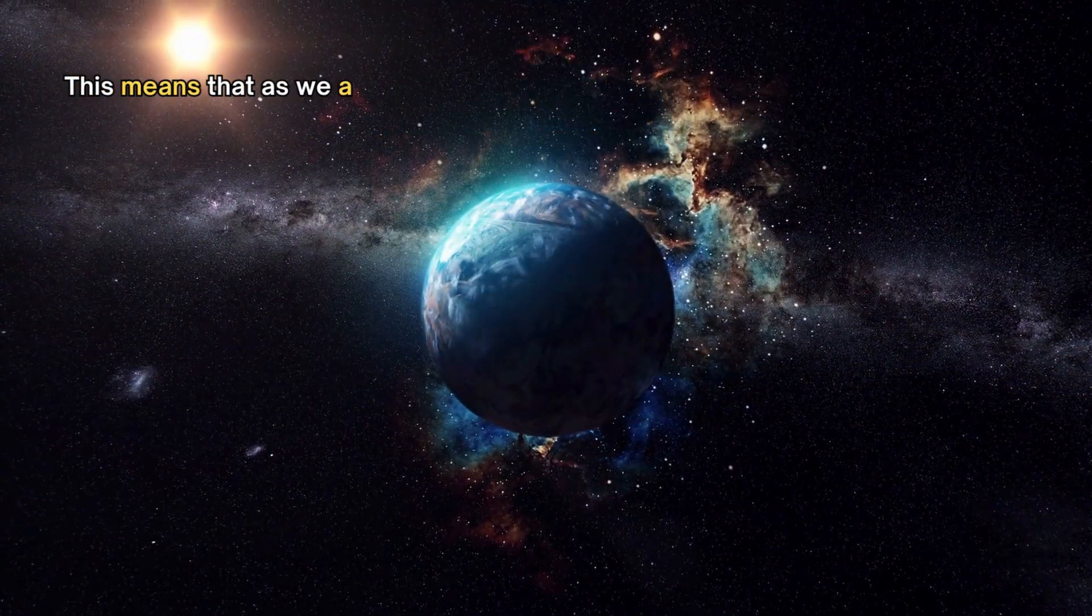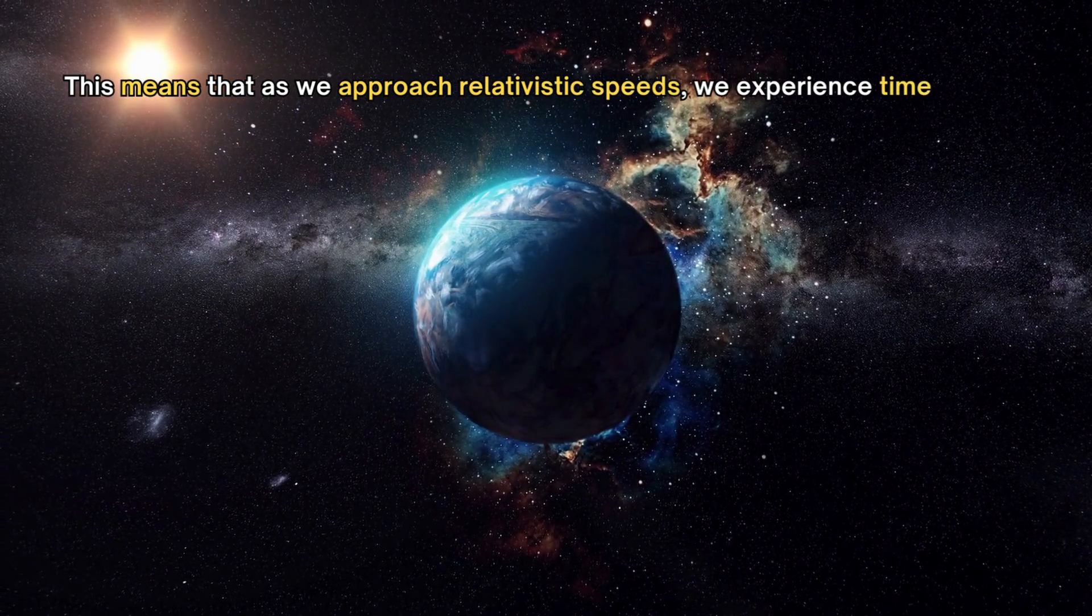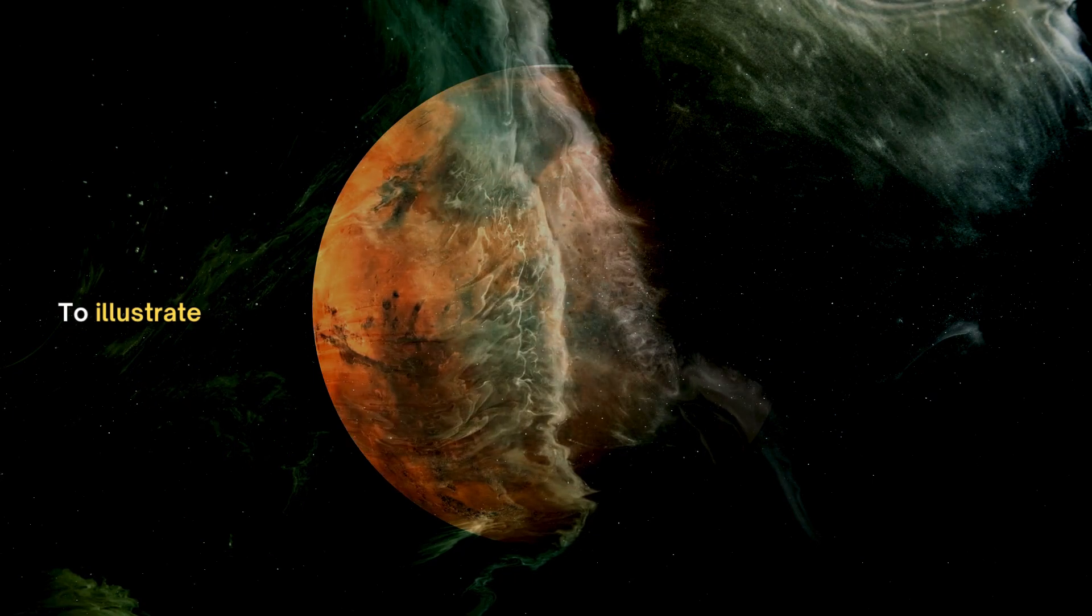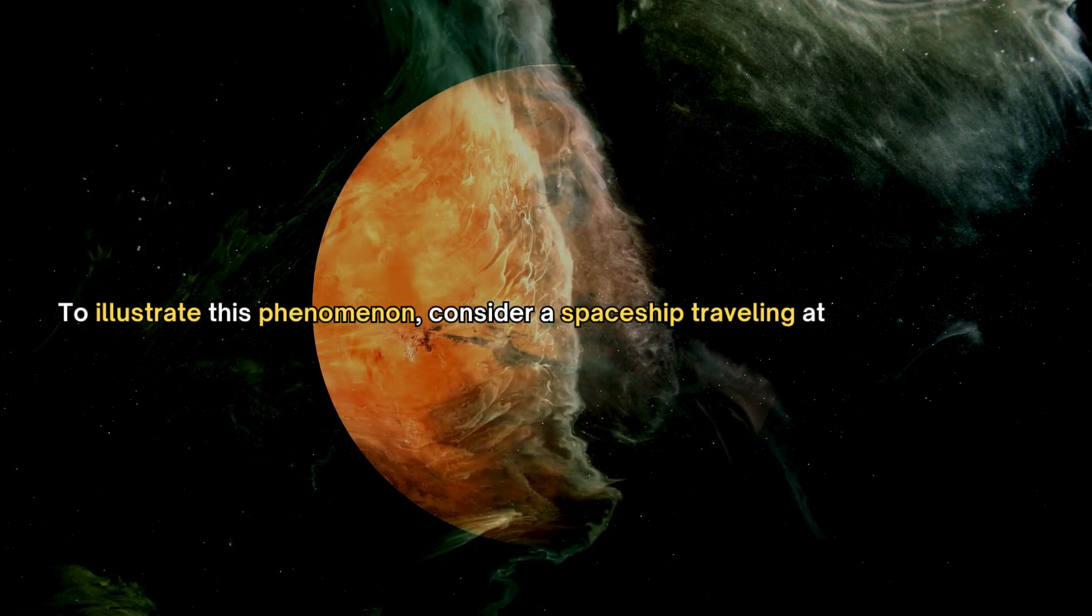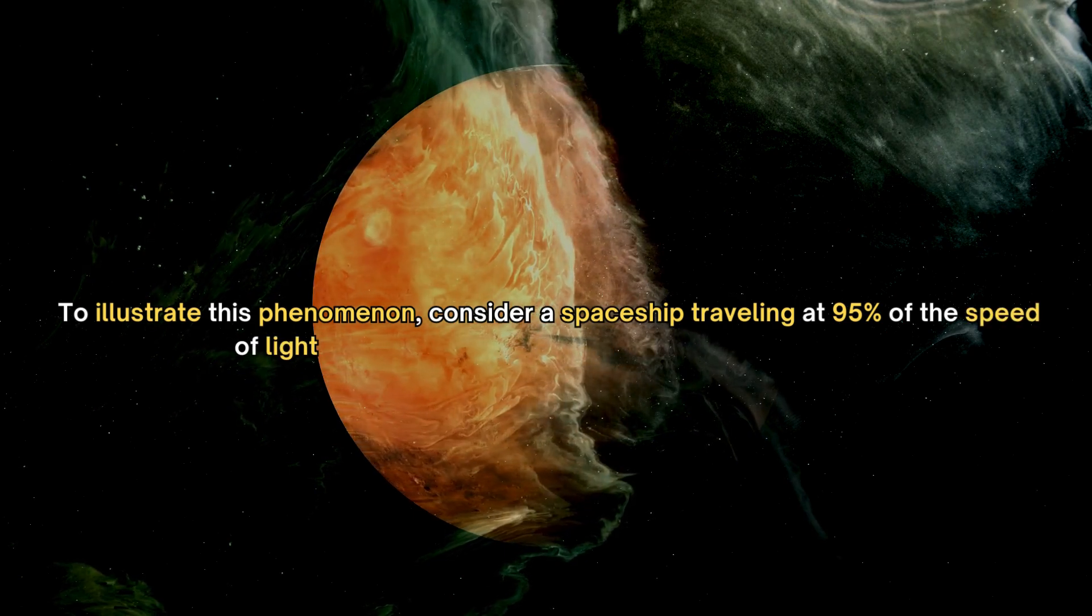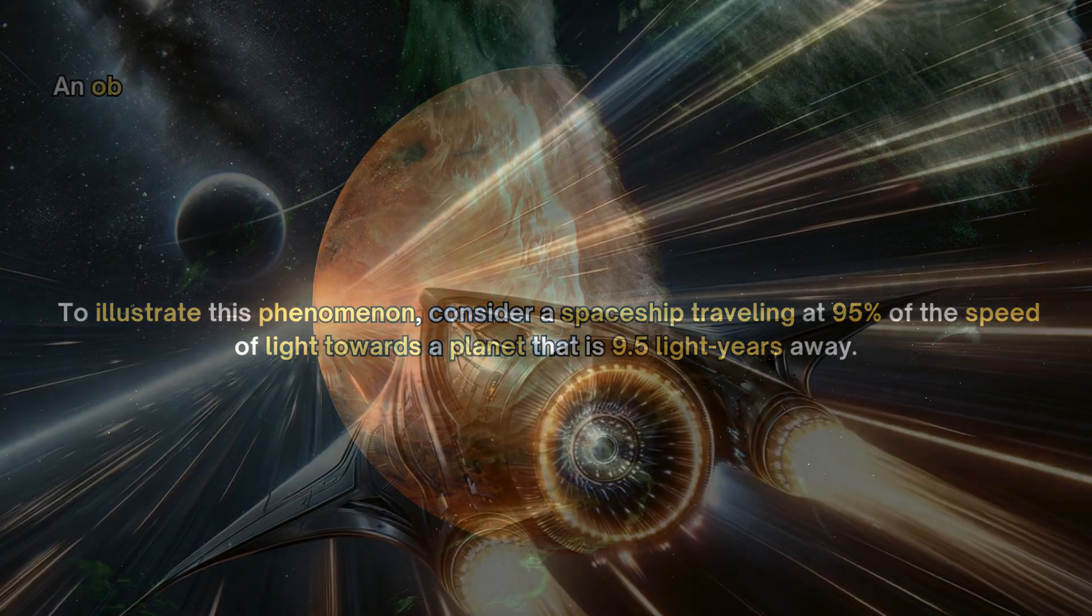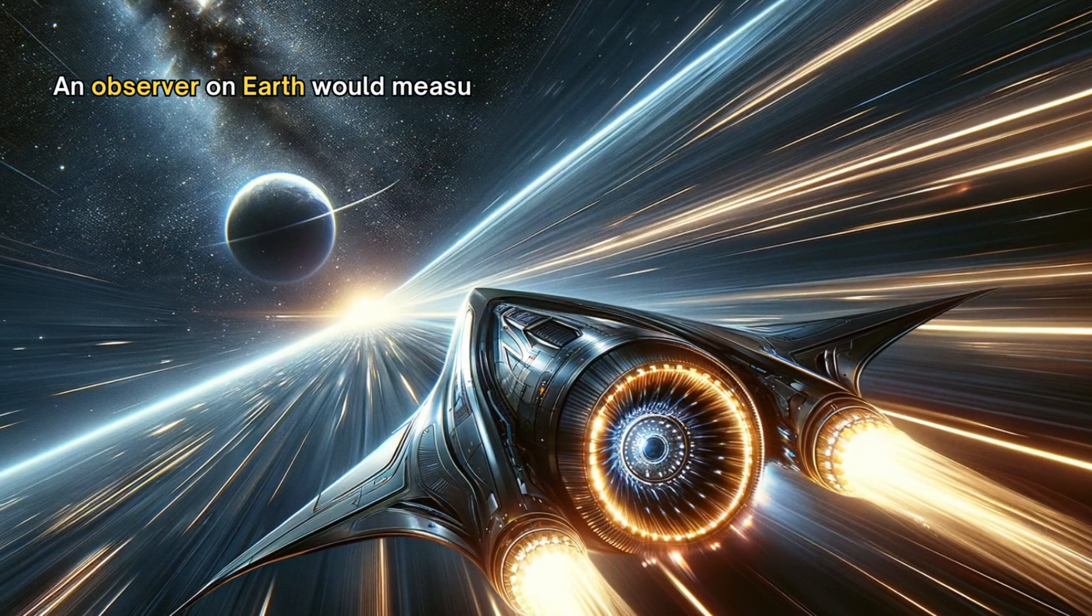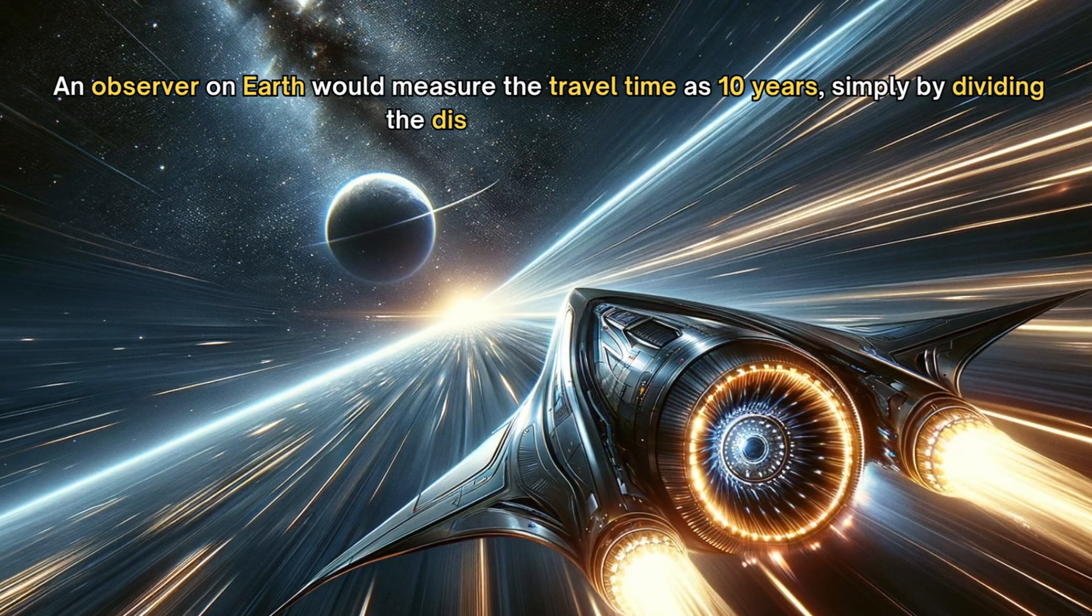This means that, as we approach relativistic speeds, we experience time dilation. To illustrate this phenomenon, consider a spaceship traveling at 95% of the speed of light towards a planet that is 9.5 light-years away. An observer on Earth would measure the travel time as 10 years, simply by dividing the distance by the speed.